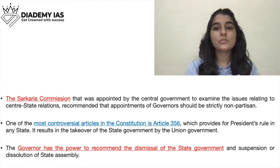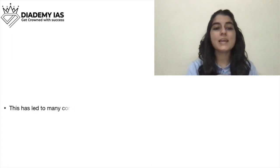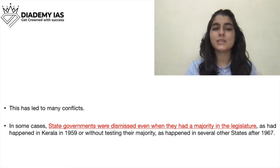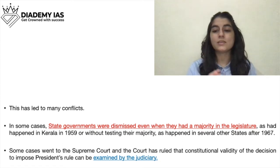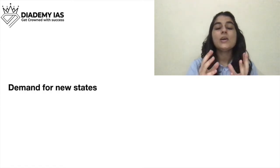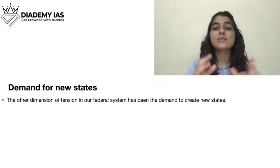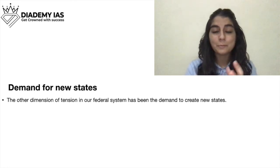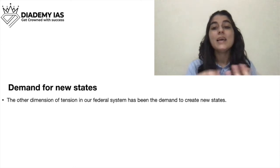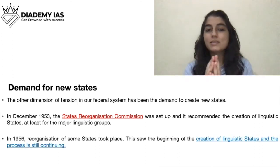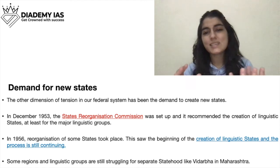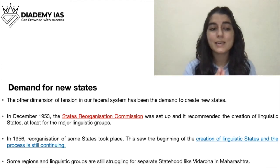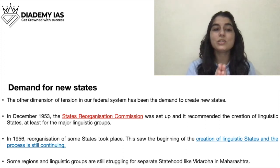The image of the Sarkaria Commission is shown here. These conflicts have led to many cases where state governments were dismissed even when they had a majority in the legislature. Such issues are now examined by the independent judiciary. Regarding demands for new states: besides demands for autonomy, many states also demand the creation of new states - for example Nagaland wants its own land, Vidarbha wants separation from Maharashtra, and there were demands for Khalistan in Punjab. After independence, a State Reorganization Commission was formed in 1953 to address these issues.